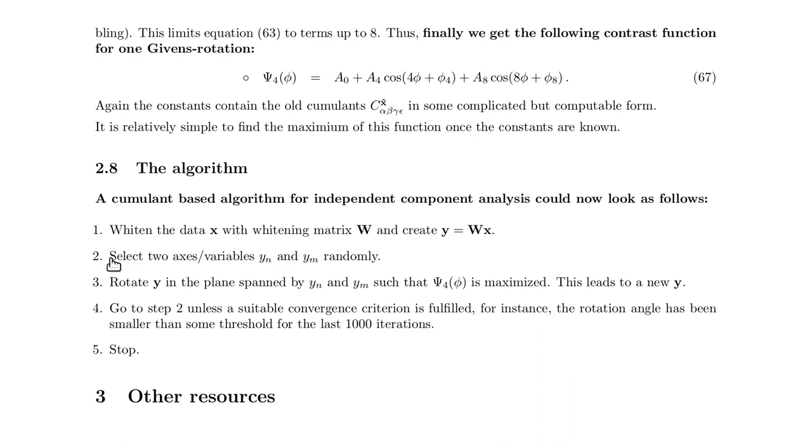yielded an angle less than one degree or something. Okay, and then you stop and then you're done. So this is one ICA algorithm based on cumulants. There are many different algorithms, but with this one, at least you have an idea how one can do ICA.